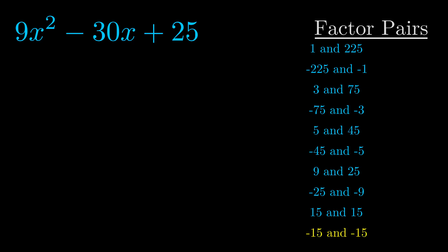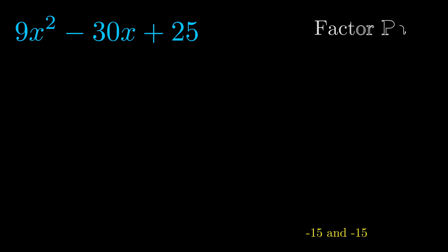And really this is the only factor pair that we need. Now once we have this factor pair what we want to do is we want to use it to split up the b value.